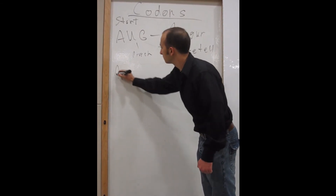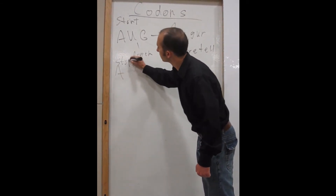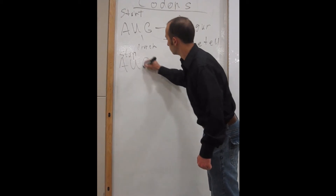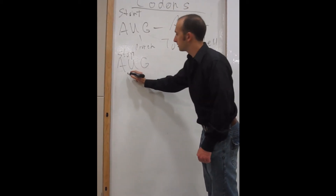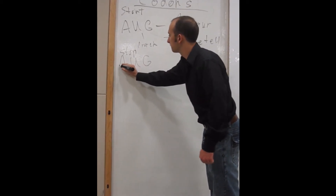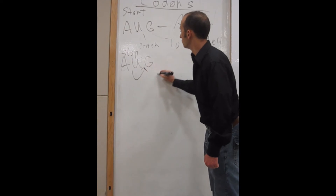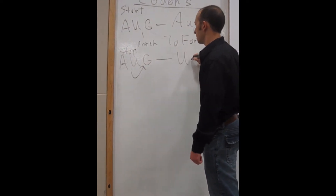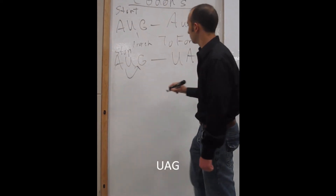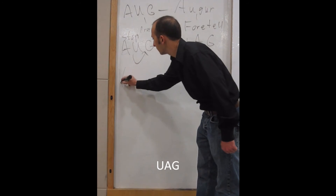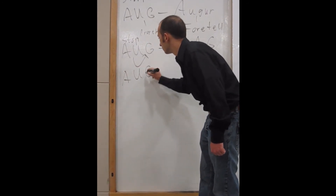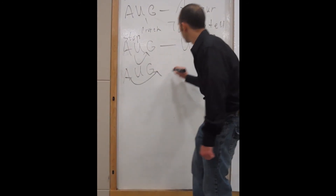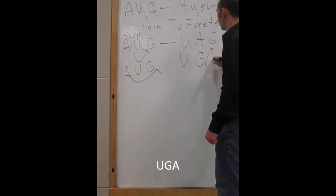Now let's do the stop codons. Starting with A-U-G again, we take the letter A and move it to get U-A-G. Let's try again with A-U-G — move the letter A all the way to the end, and that gives us U-G-A.